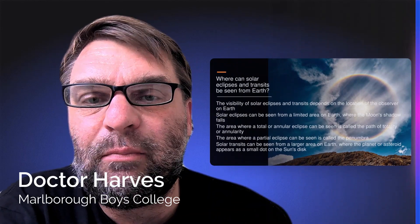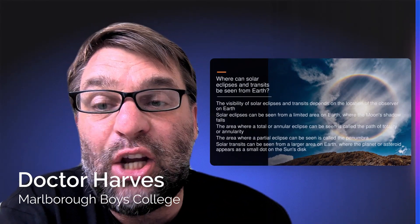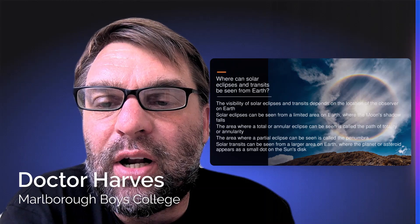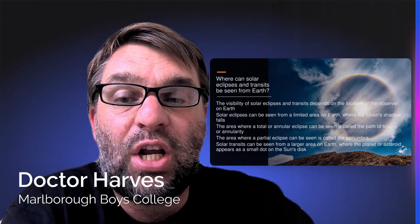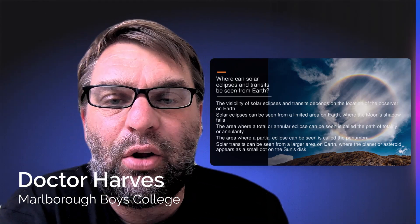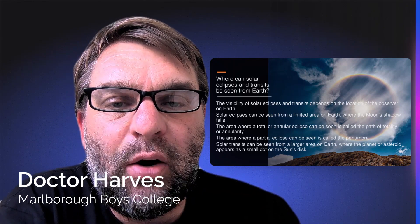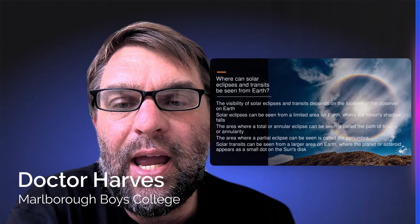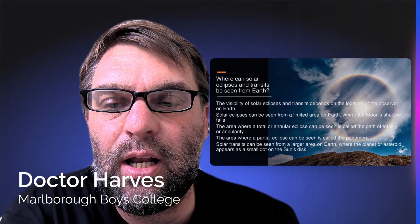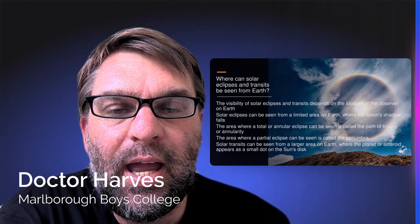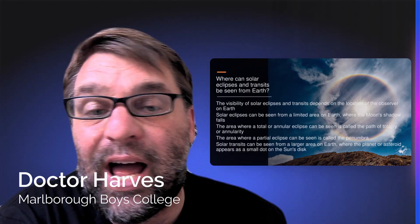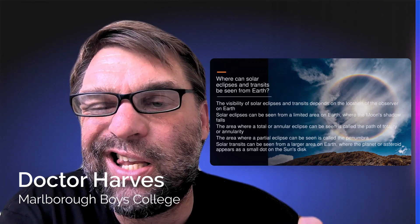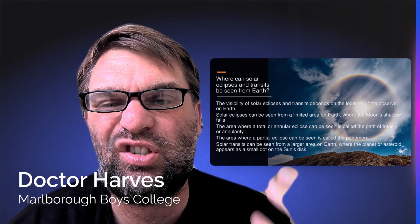When can you see them from Earth? It depends on your location. Solar eclipses can usually be seen in a very limited area of Earth — like an annular eclipse — when the Moon's shadow falls on that particular part of the Earth. The area where this annular or total eclipse occurs is called the path of totality, in the case of a total eclipse, or annularity, in the case of an annular eclipse. Solar transits, on the other hand, can be seen in large areas of the Earth, especially as the planet or asteroid appears as a small dot on the Sun's disk due to relative sizes.